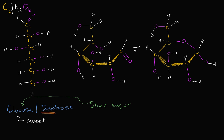You might notice we have six carbons, and then for every one oxygen we have two hydrogens, which is really the ratio of hydrogens to oxygens in water. We have twelve hydrogens and six oxygens, maintaining that 2:1 ratio. It's really good to familiarize yourself with the different parts of this molecule.